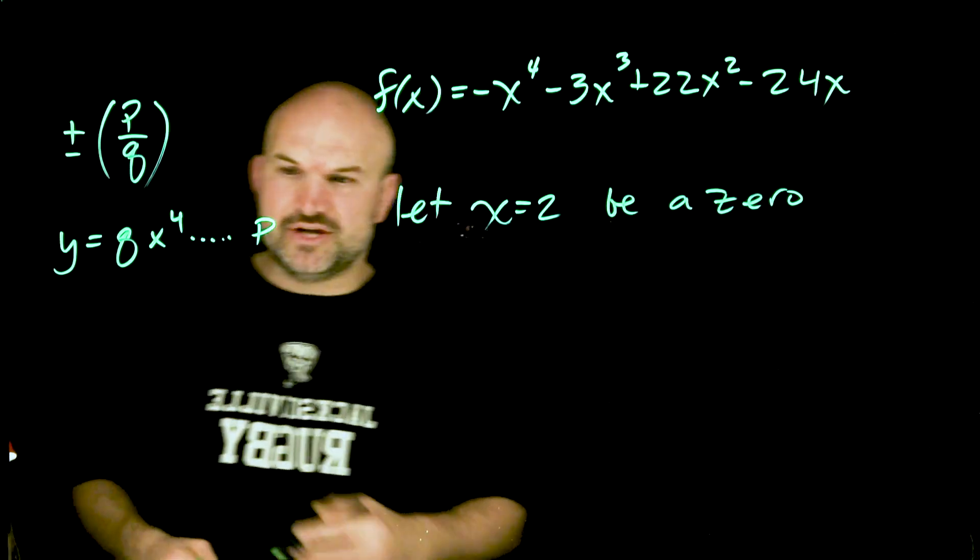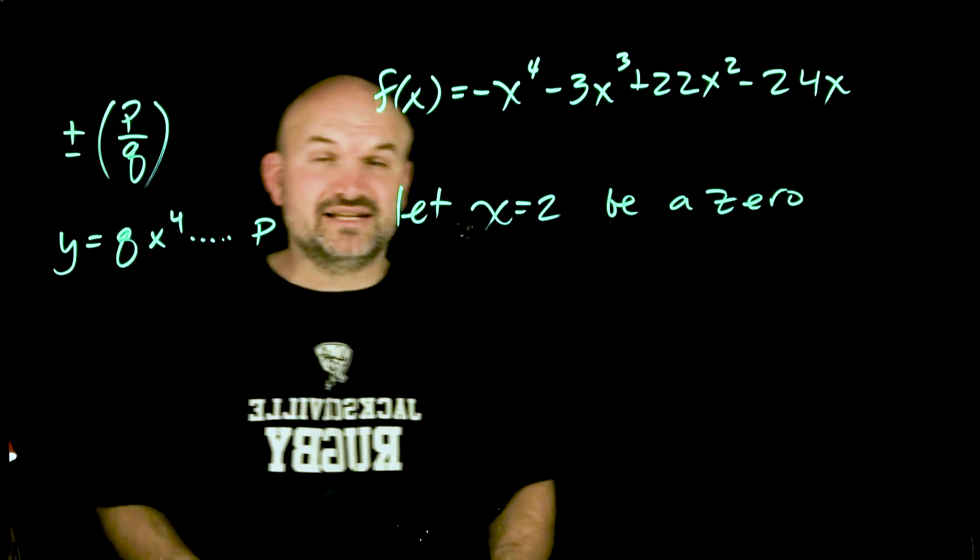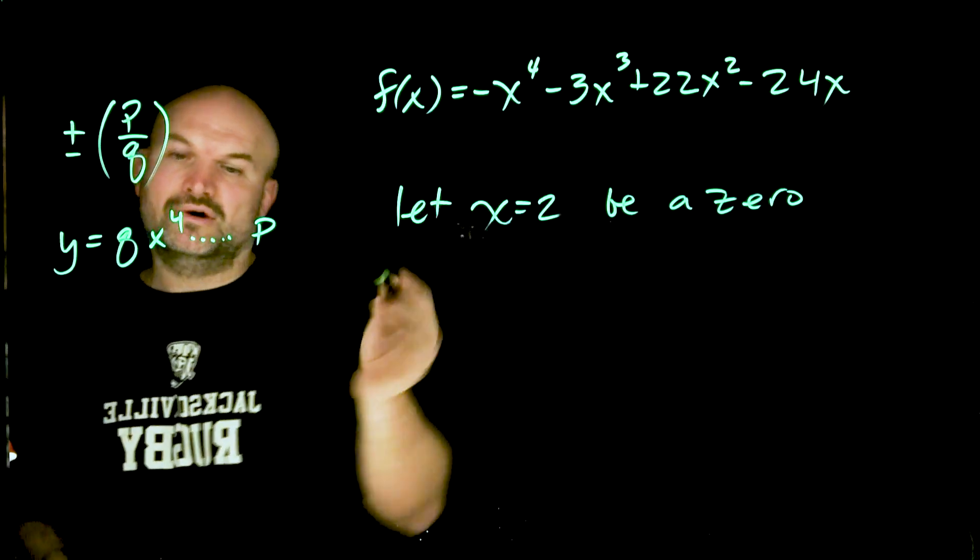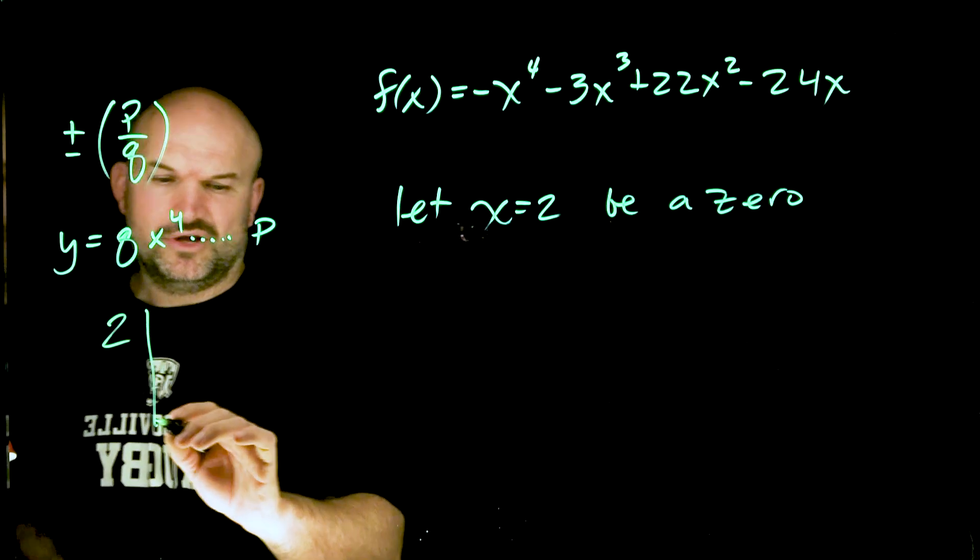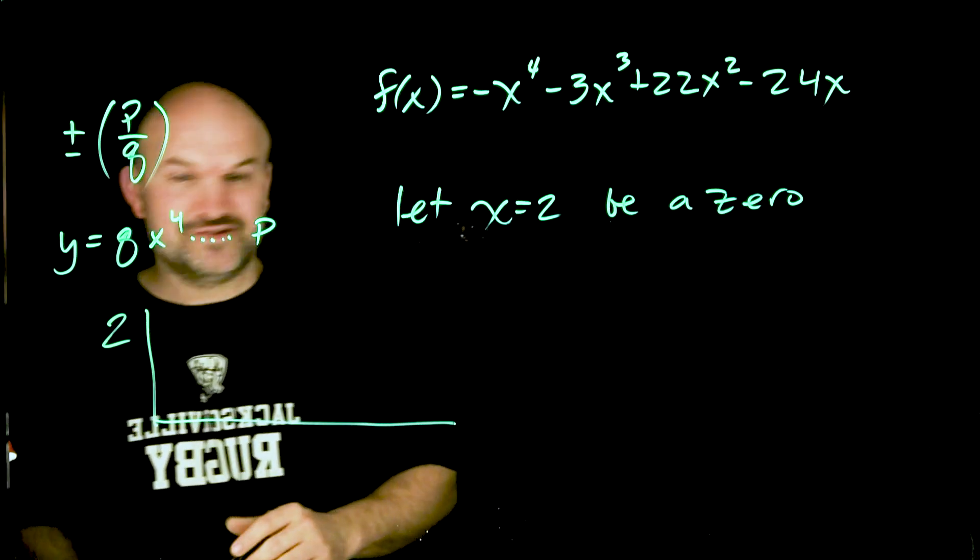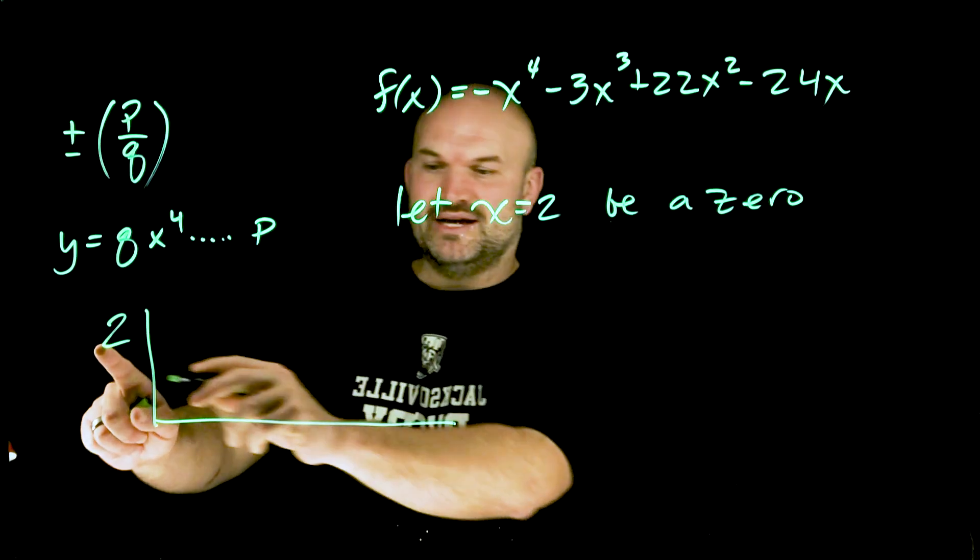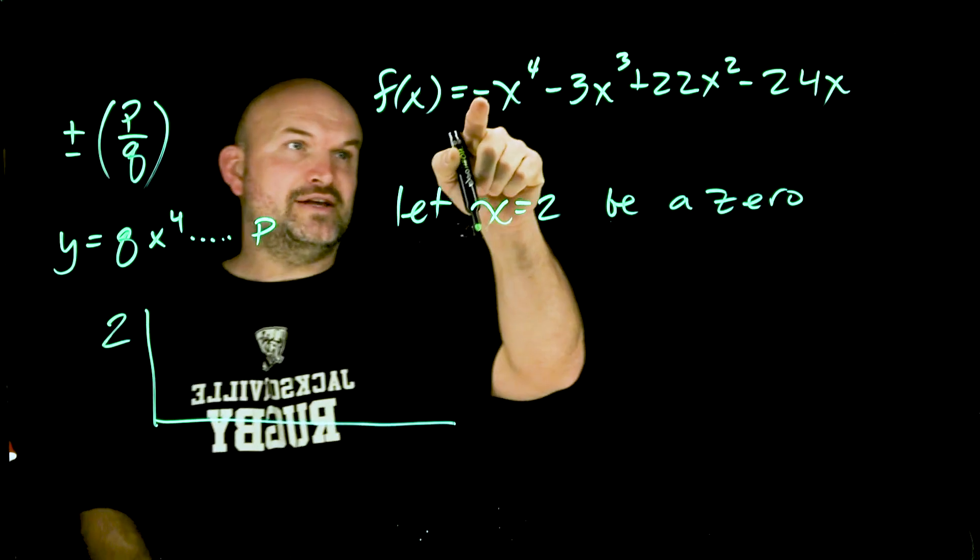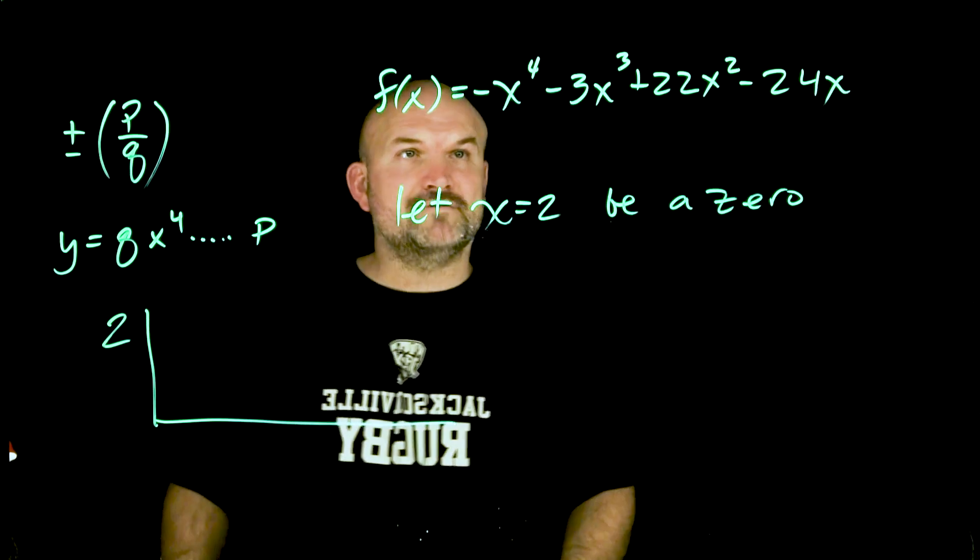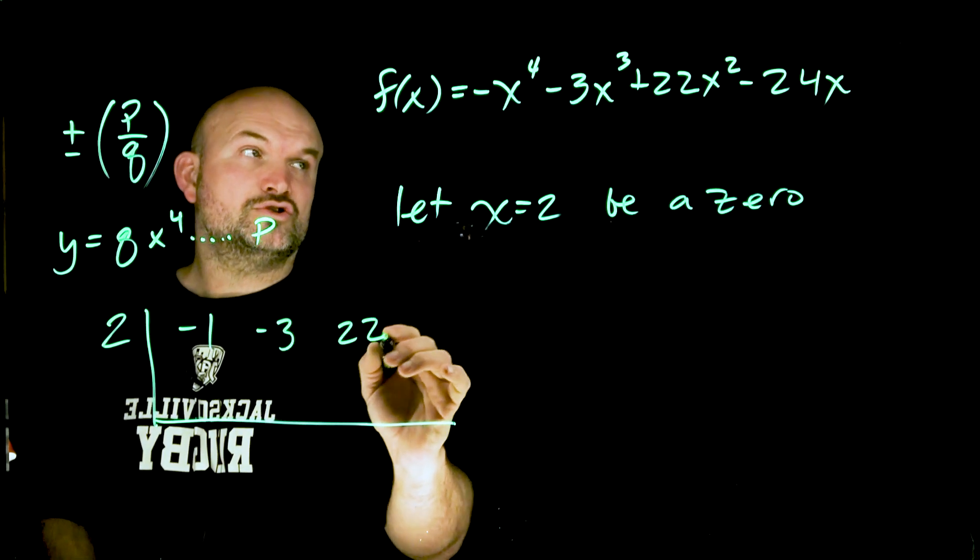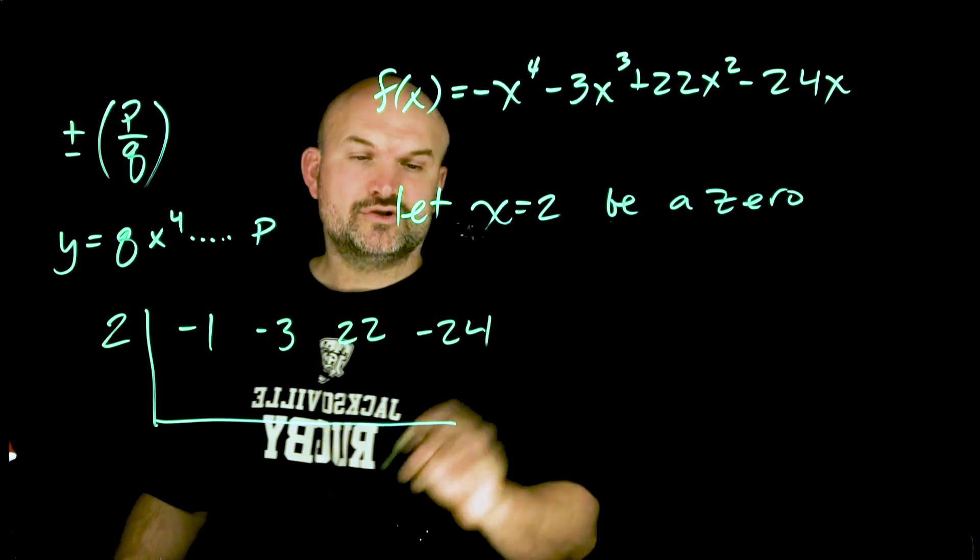Let's go ahead and apply synthetic division to see if we can find the remaining factors. I'm going to use synthetic division because I don't want to use long division, nobody wants to use long division, especially on a polynomial like this. To use synthetic division you take your zero, put it on the outside of your synthetic division bar, and then you're simply just going to take the coefficients of your polynomial here. So I have a negative one, negative three, 22, and a negative 24.